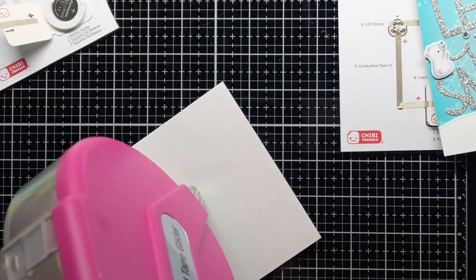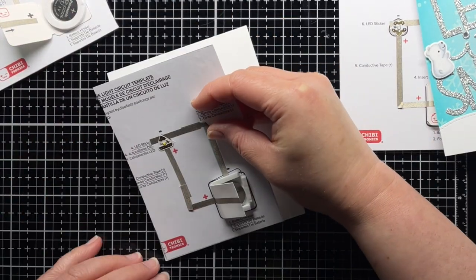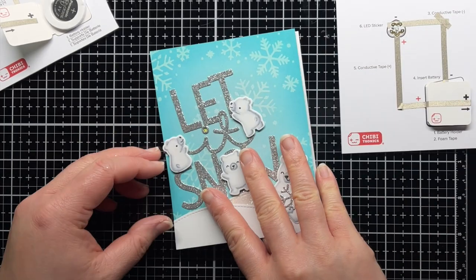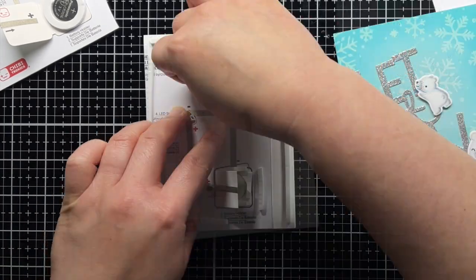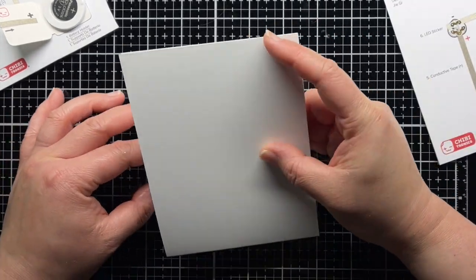I adhere the template to a top folding card base, and then add foam mounting tape around the edges, avoiding the bottom of the battery holder so I can slide a strip of cardstock there to prevent the circuit from completing for mailing. Then I simply adhere my polar bear panel on top, and now I have a fun light-up holiday card.